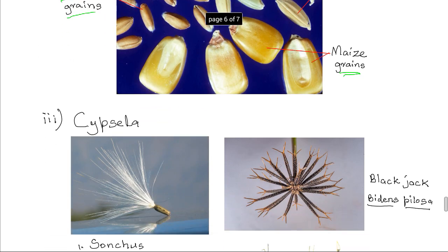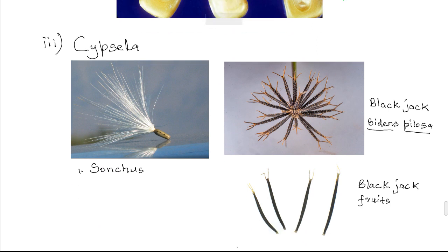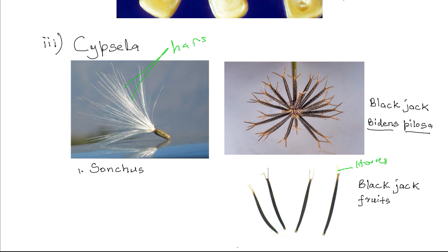Then there is the cypsela. In the cypsela, this is a one-seeded fruit in which the calyx persists to form a parachute of hairs, or may form hooks. Either way, the hairs and the hooks help in the dispersal of the fruit. Examples include the fruit of the Senecio and the fruit of the Black Jack or Bidens pilosa. Here is a collection of fruits, and you can see the body of the fruits and at the apex there are hooks that aid in the dispersal of the fruit.